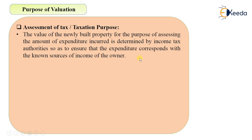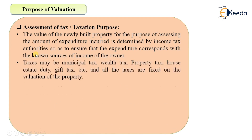For example, if an owner claims he spent money building a property and wants an income tax exemption, the authorities will cross-check whether the stated expenditure was actually required. For this, they carry out the valuation for fixation of tax. The types of taxes involved may include municipal taxes, wealth tax, property tax, house estate duty, and gift tax.